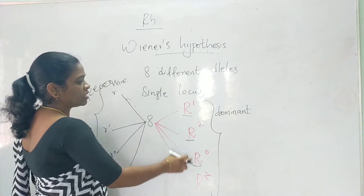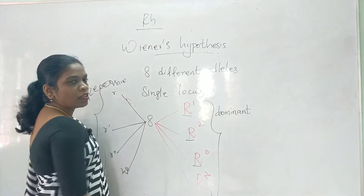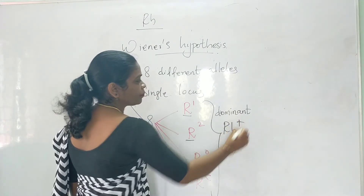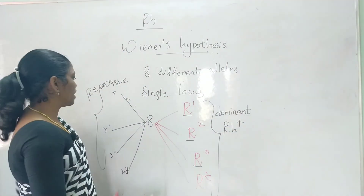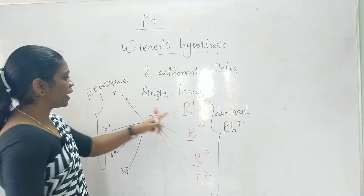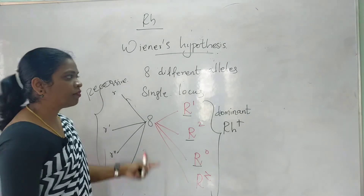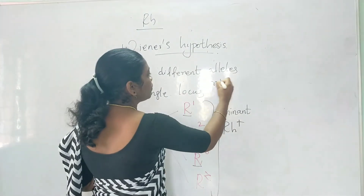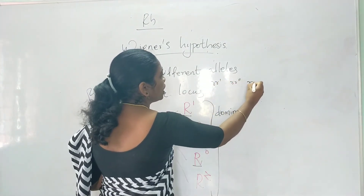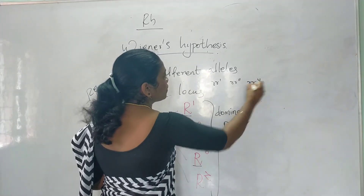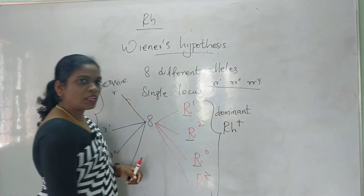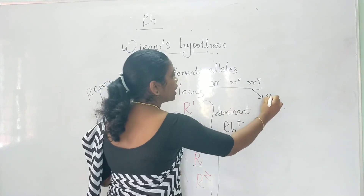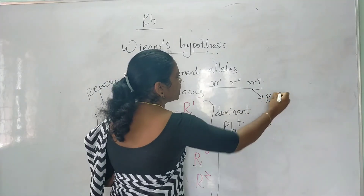If an individual possesses any of the dominant capital R alleles, their blood group will be Rh positive. If the individual does not have capital R and instead has double recessive small r — that is, genotypes like rr, rr', rr'' — their blood group will be Rh negative.